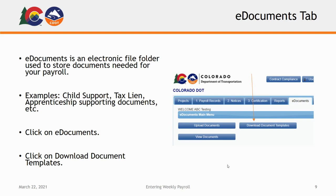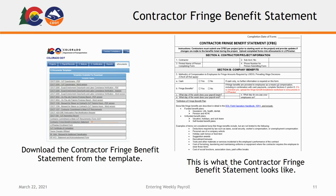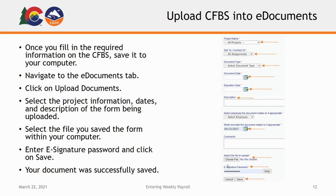Click on the e-documents tab, and then click on Download Document Templates. This is a list of the templates available for download. A required document all contractors need to upload will be the Contractor Fringe Benefits Statement, available from the templates. It will be downloadable as a fillable Word document. Complete the Contractor Fringe Benefits Statement and save it to your computer. Navigate to e-documents and click on Upload Documents. Select the project information, dates, and description of the form being uploaded. Select the file you saved on your computer, enter your e-signature password, and click Save. Your document was successfully saved.